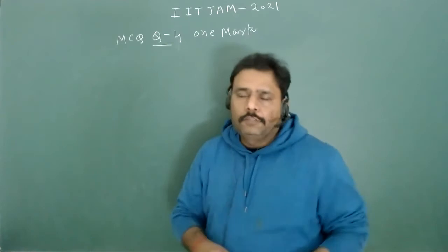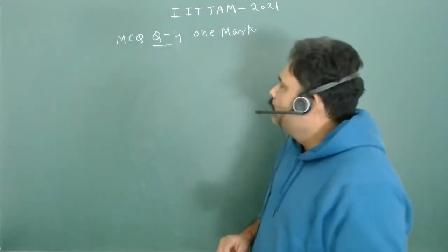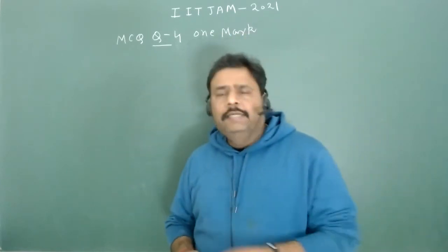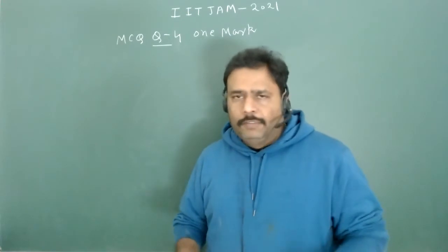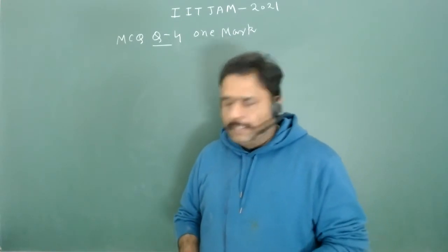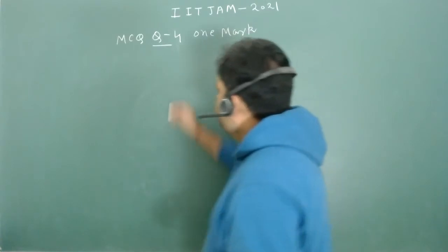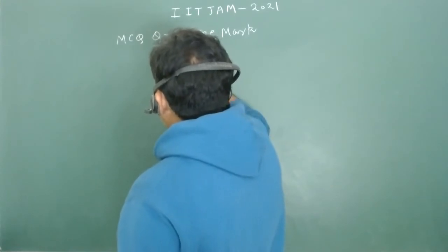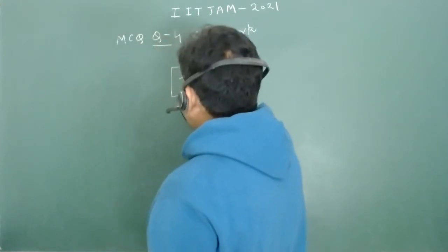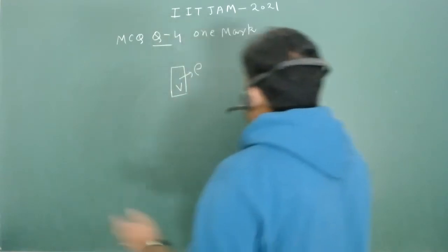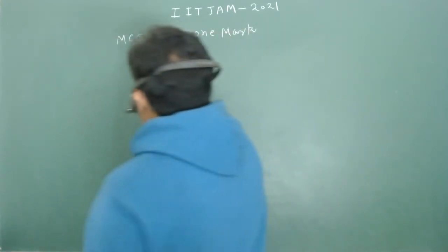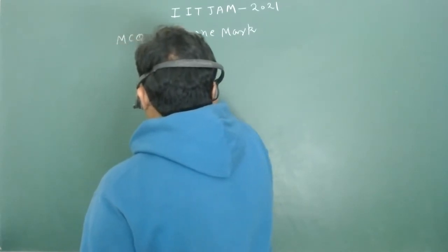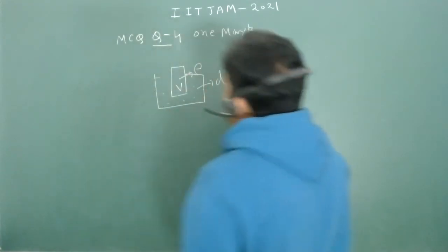Hello students, we are going to solve a problem from IIT JAM 2021 — an MCQ-type problem from fluid dynamics. There is an object with density rho and volume V, and it is submerged into some liquid with density d.